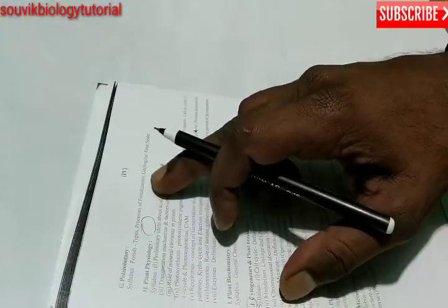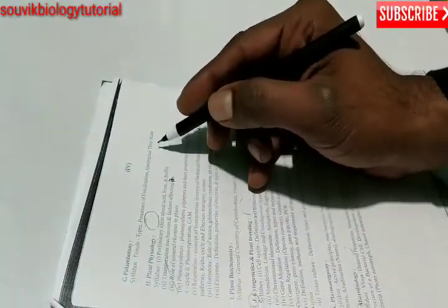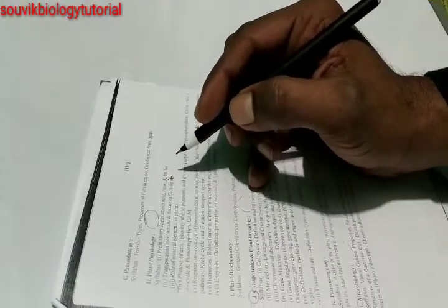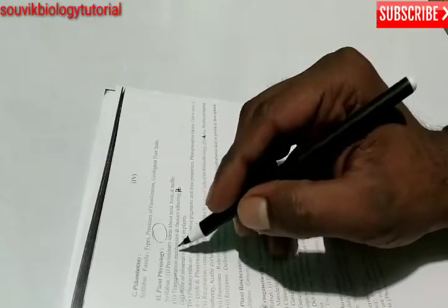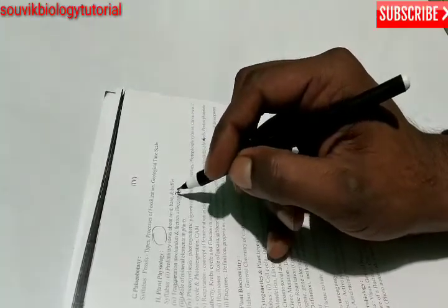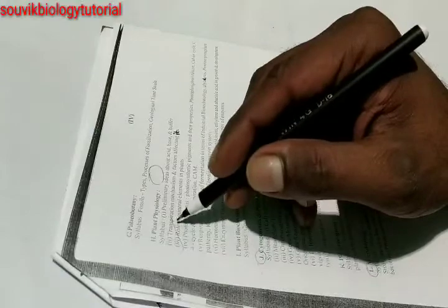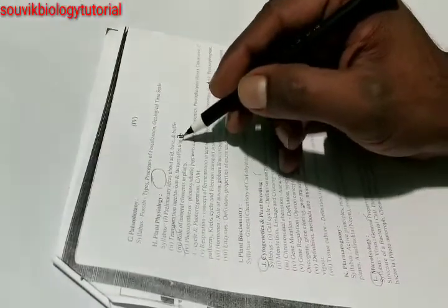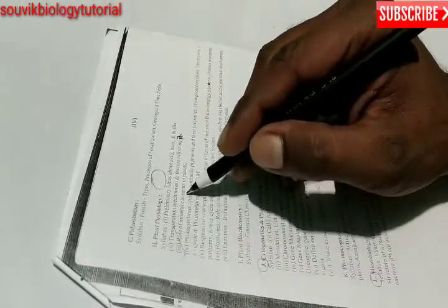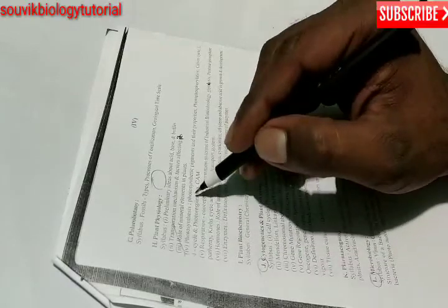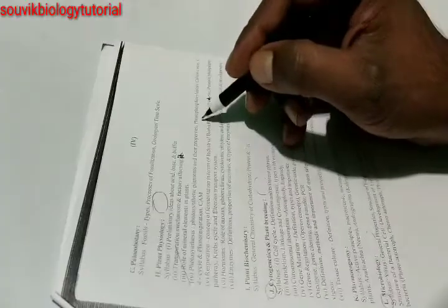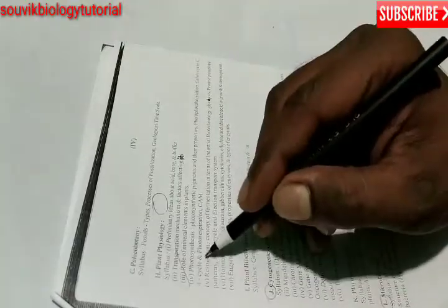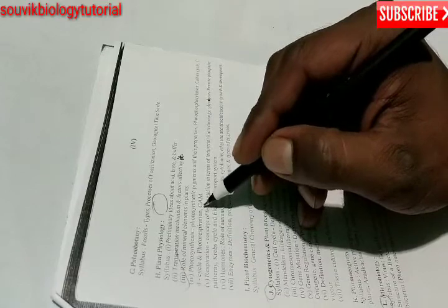Next is paleobotany. You have to study the fossils types, process of fossilization, geological time scale. Next is plant physiology. The syllabus is preliminary ideas about acid, base and buffer. Next is transpiration, mechanism and factors affecting it. Next role of mineral elements in plants.